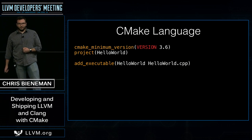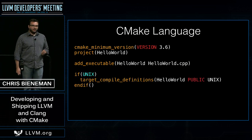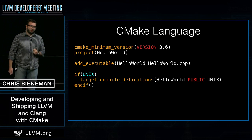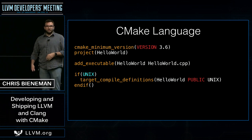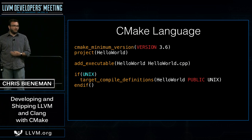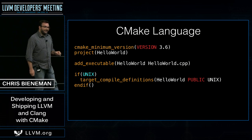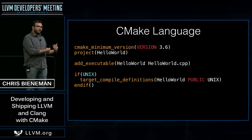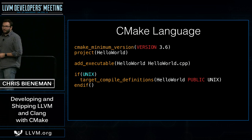If we wanted to make this a little more complicated, we can add conditional configurations. For example, we can add an if statement on if Unix, which says if you're targeting a Unix platform, and then add a target compile definition named Unix. Public and private target compile definitions equate to adding -D lines to the compiler when invoking compile commands during the build. There's also another mode called an interface definition, which is useful when building a large software project to say all clients of a library must define a certain define.